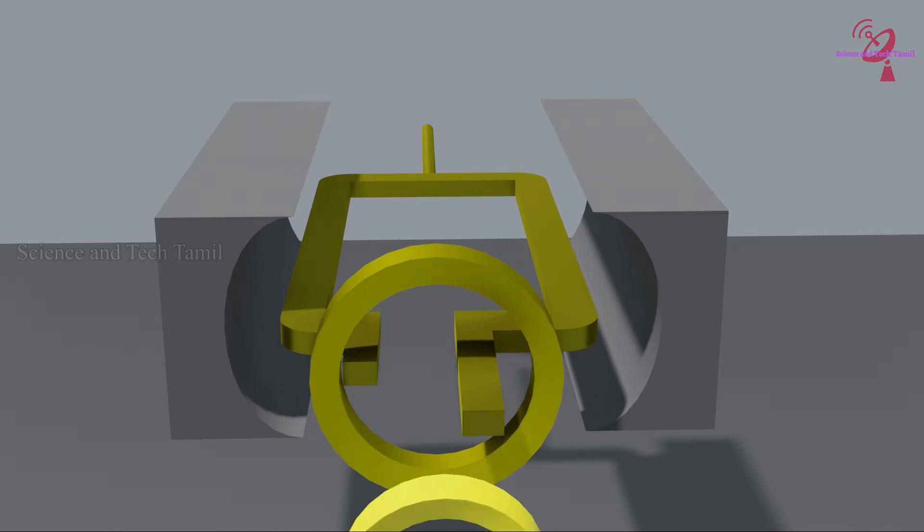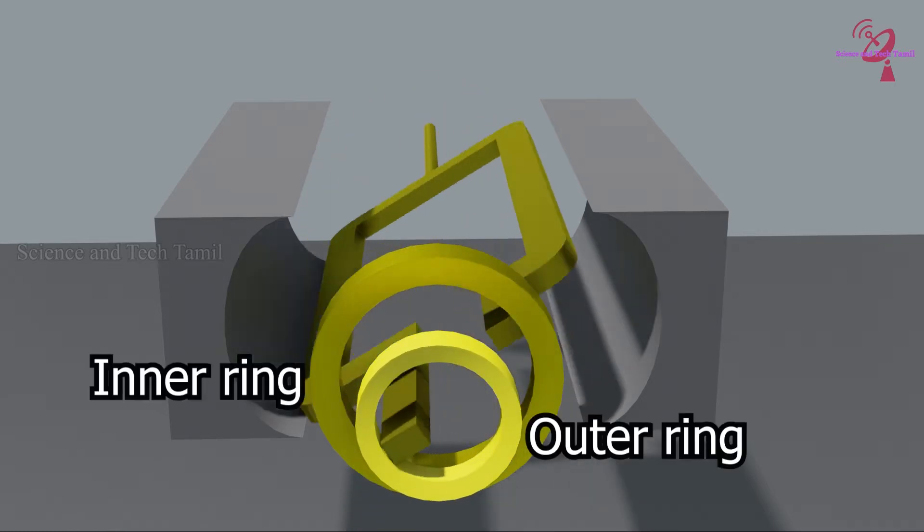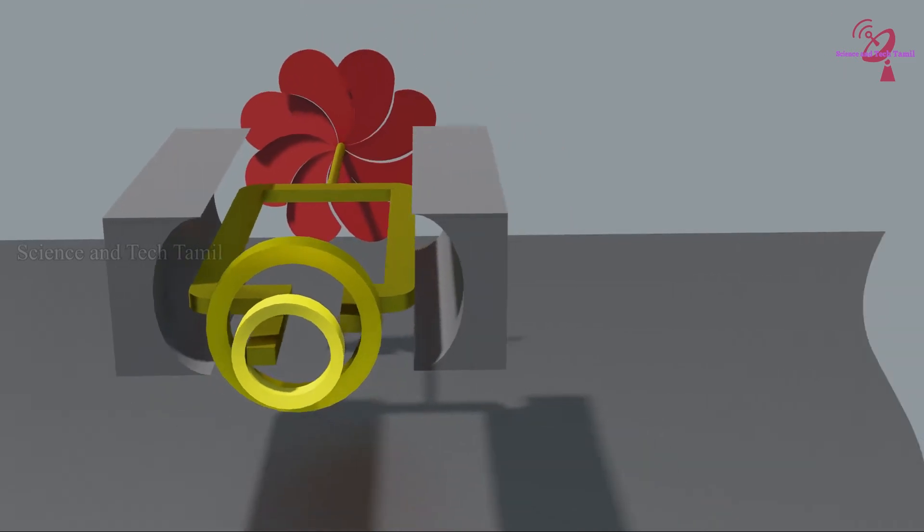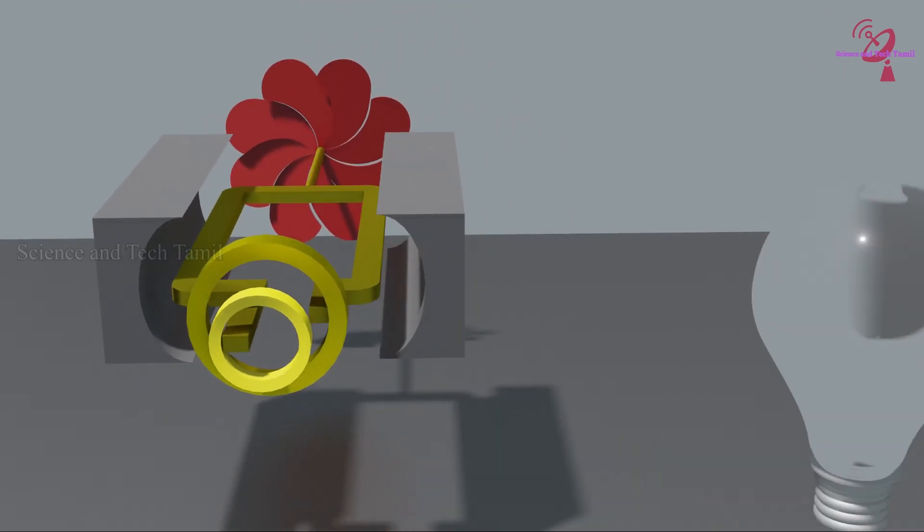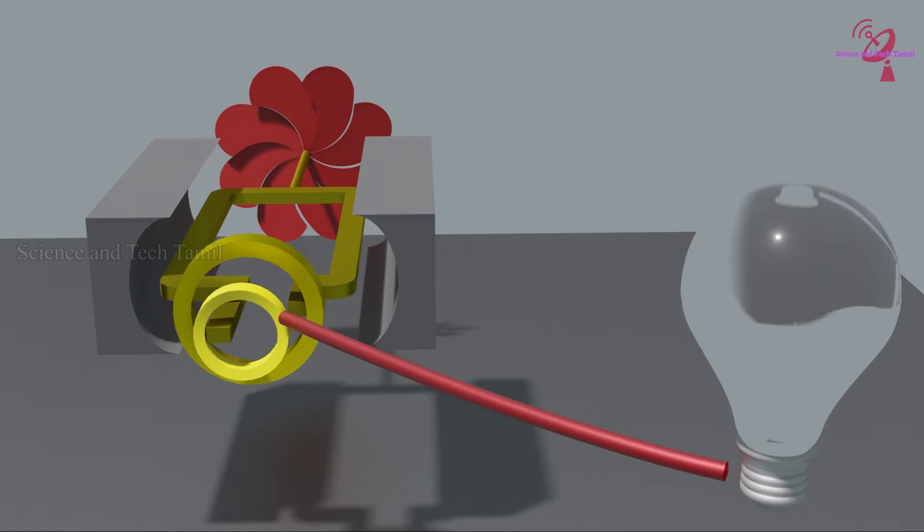When the coil starts to rotate, it will contact both rings. These rings are connected with each terminal of the electric circuit, and this is called a complete electric circuit.